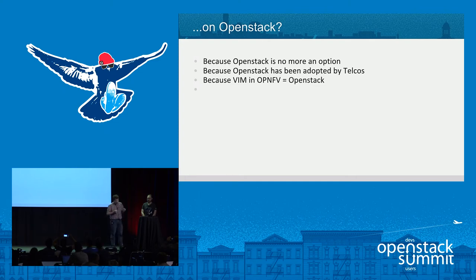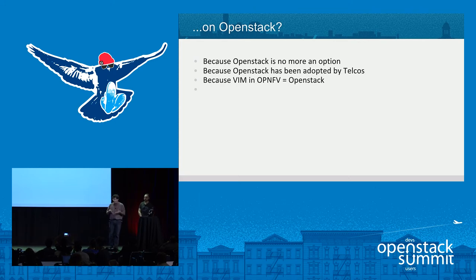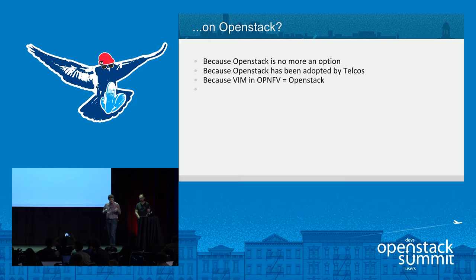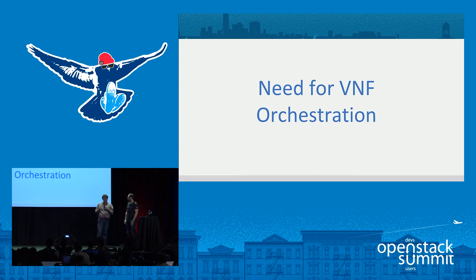Why is it on OpenStack? Even if it's not mandatory, in the last version, Colorado, 37 scenarios that have been validated are based on OpenStack as a cloud provider. So OpenStack is no more an option. OpenStack has been adopted by most of the telcos — that was one of the key topics in yesterday's keynote. Last year, AT&T received the Super User Award. This year, it was China Mobile. So you can see that telcos are part of the business, and VIMS for them means something. I will give the floor to Arthur to explain why we also need a way to orchestrate it.